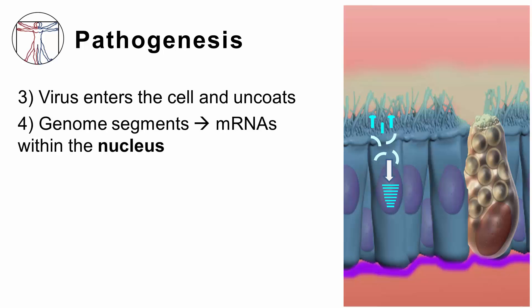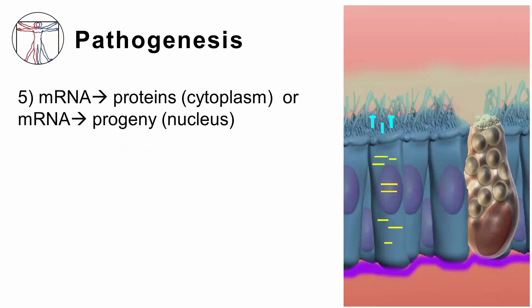Once in the cell, viral uncoating occurs within cell endosomes. The virion genome moves to the nucleus where replication takes place. Viral RNA polymerase transcribes the genome segments into messenger RNAs. Most of these messenger RNAs will enter the cytoplasm where they will be translated into viral proteins. However, some messenger RNAs will remain in the nucleus where they will serve as templates for the synthesis of negative strand RNA genomes for progeny viruses.